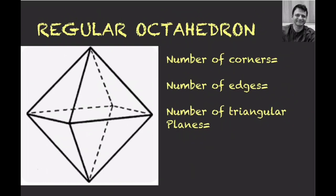Now let us consider the regular octahedron, also known as a square bipyramidal geometry. The number of corners: counting gives corners 1, 2, 3, 4 around the equator, and top and bottom — so 6 corners total. The number of edges: 4 in the square base, 4 edges at the top pyramid, and 4 at the bottom pyramid, giving 12 edges. The number of triangular planes: 4 at the top and 4 at the bottom equals 8 triangular planes — hence the name regular octahedron.